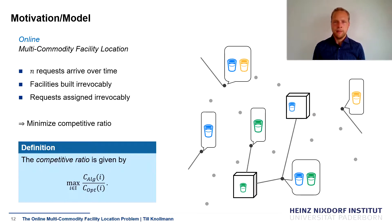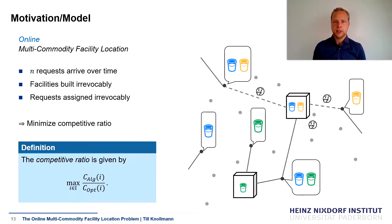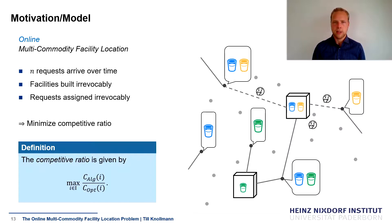So over time you can make mistakes. For example, in this scenario it might have been worthwhile to include the yellow drink in the upper facility as well and to connect the two upper requests to that facility. However, since you didn't know you would build the facility there, you did not do this, so you paid more than you could have. We want to analyze the competitive ratio, which is simply the ratio of an algorithm fighting against this online input — not knowing what's going to happen — to the cost of a solution which knows everything beforehand.